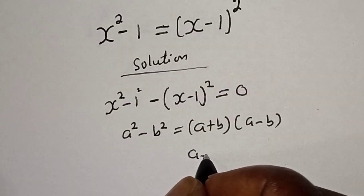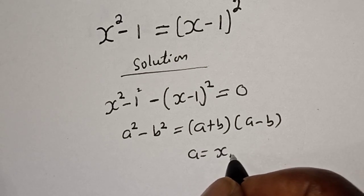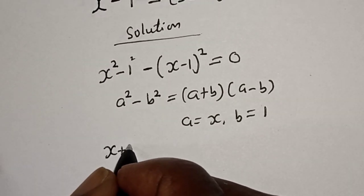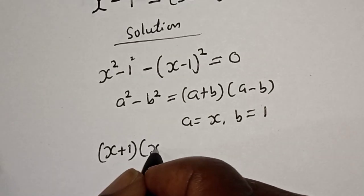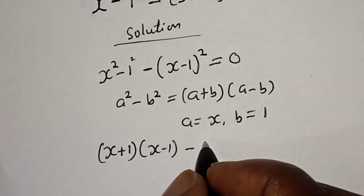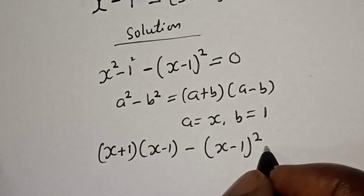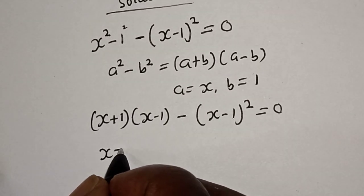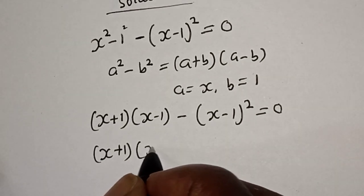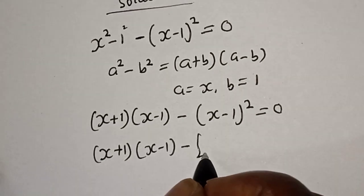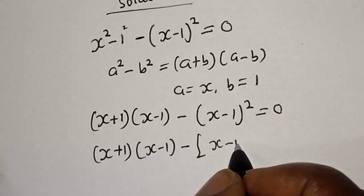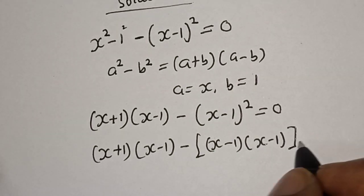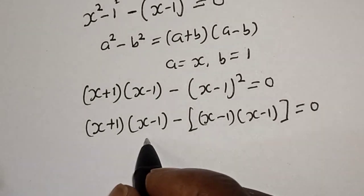Where a is equal to s and b is equal to 1. So we have (s plus 1) multiplied by (s minus 1), then minus (s minus 1) squared is equal to 0. We can see that (s minus 1) is common here.